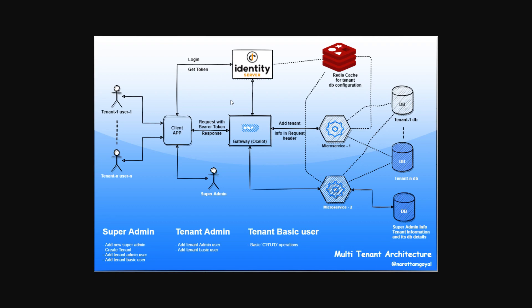Whenever any operation happens — any user activity from the website — the data is stored in that tenant's specific DB. For example, tenant 1's data goes to DB tenant 1, and tenant N's data goes to DB tenant N. There is no mixing — we are not doing a query like 'get results where tenant ID equals 1 or 2.' We create a separate DB for each tenant.